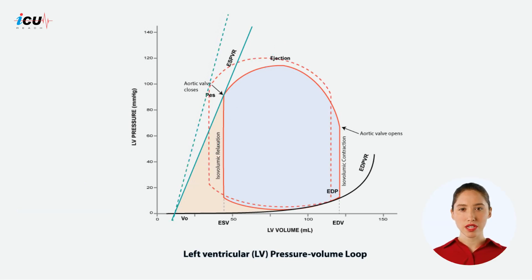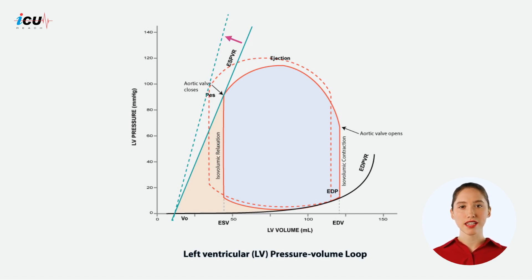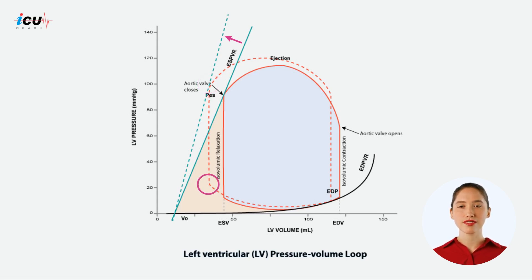With increased contractility, the heart's ability to generate force during contraction is enhanced. This has specific effects on the end systolic pressure (ESP), end systolic volume (ESV), and end diastolic volume (EDV),